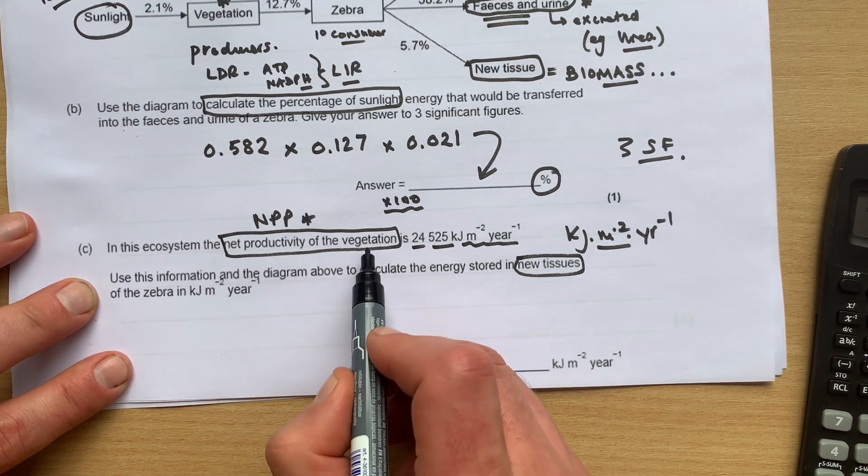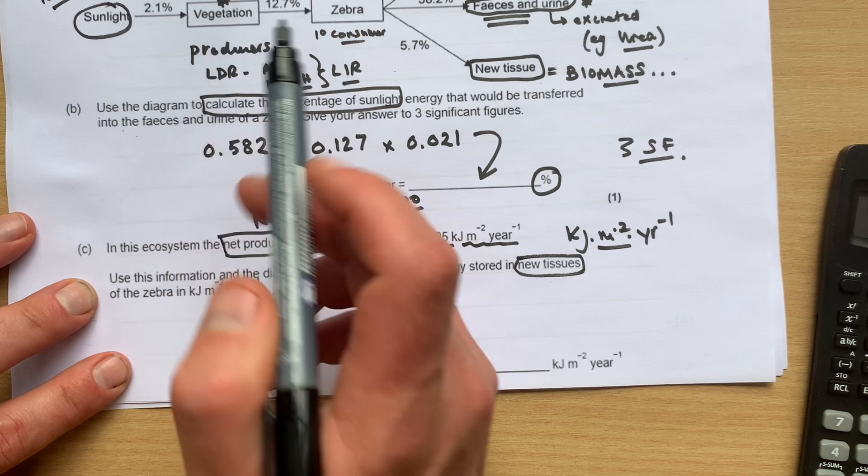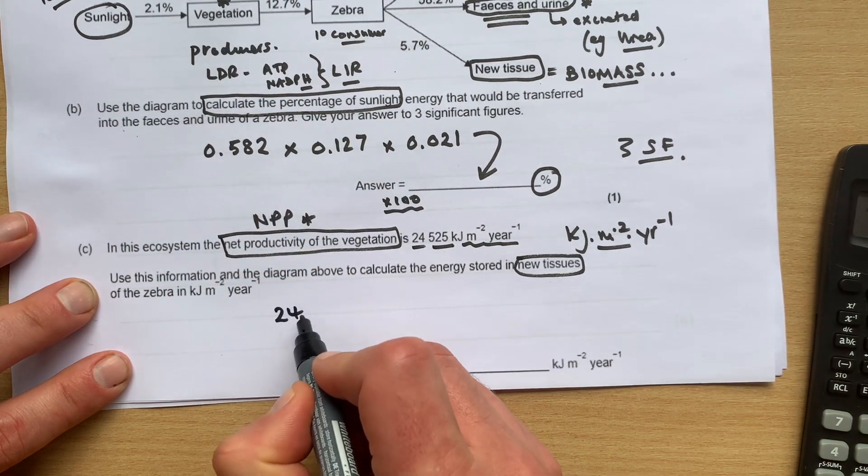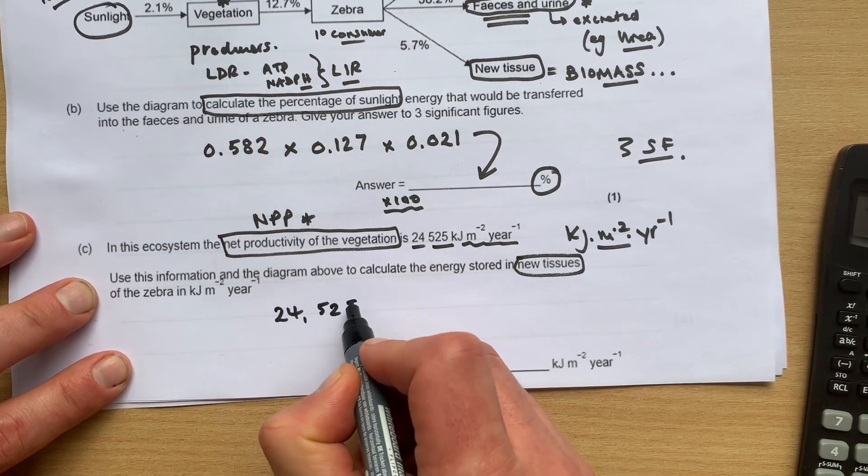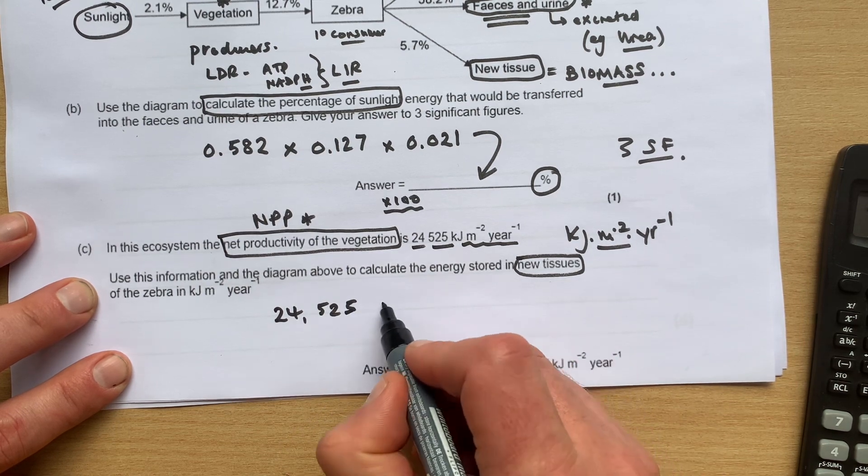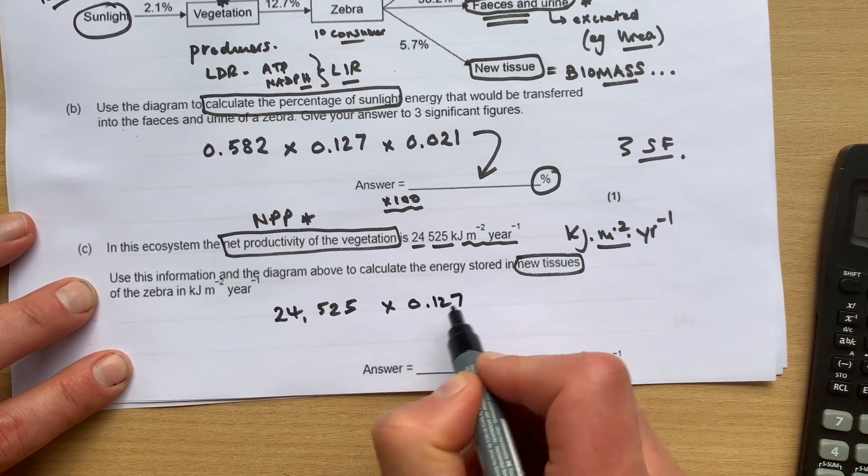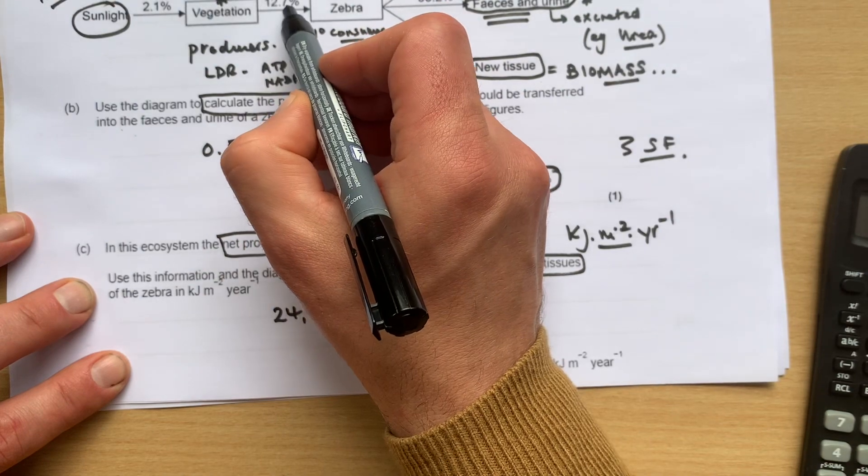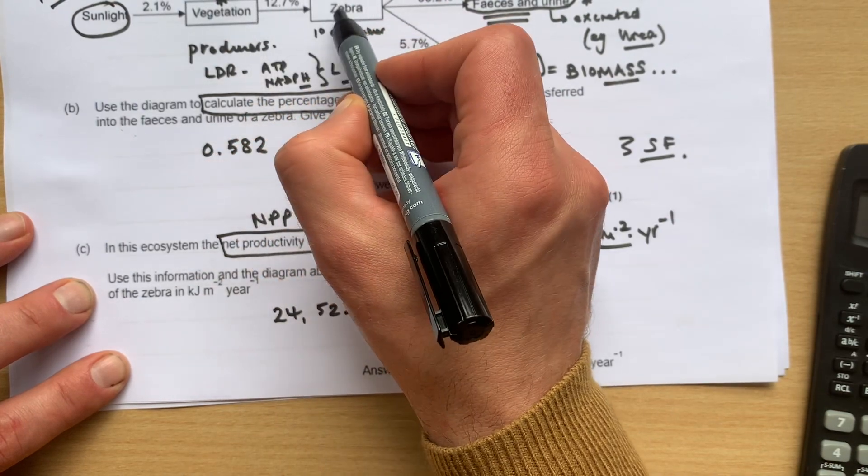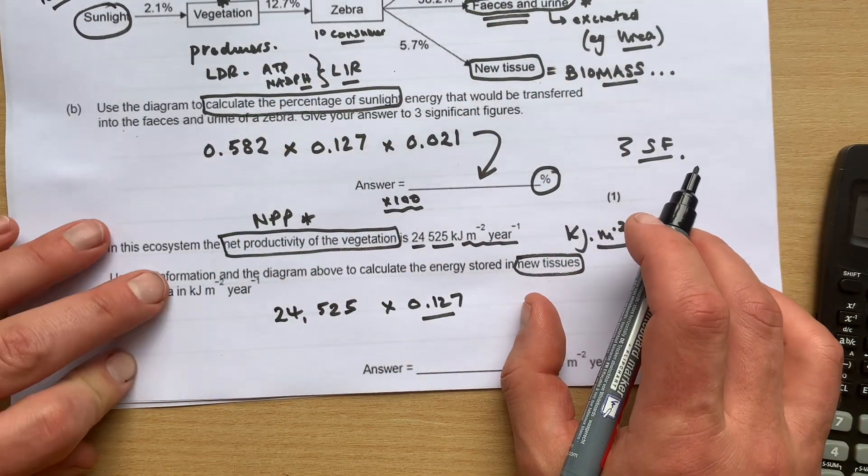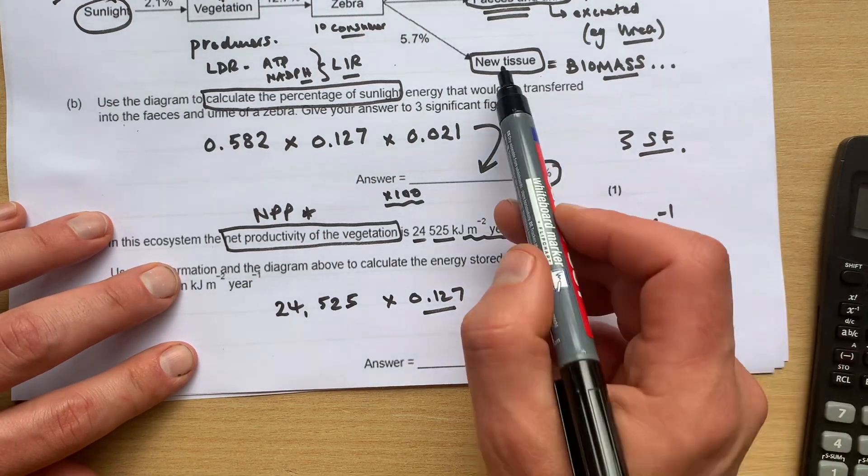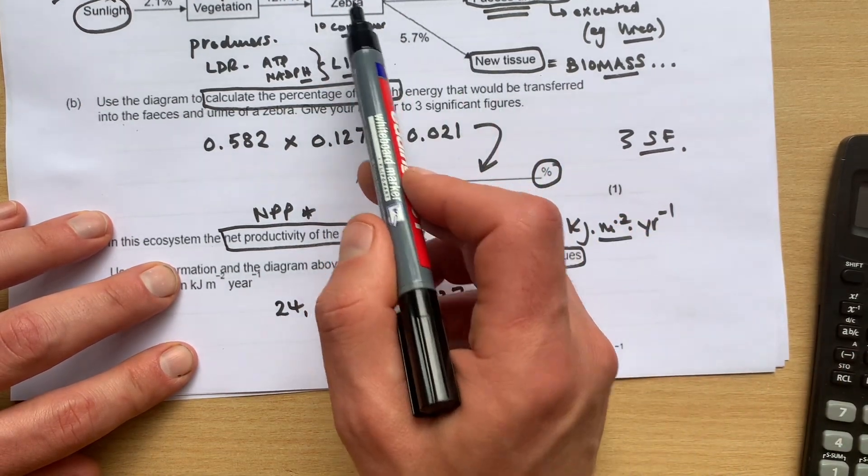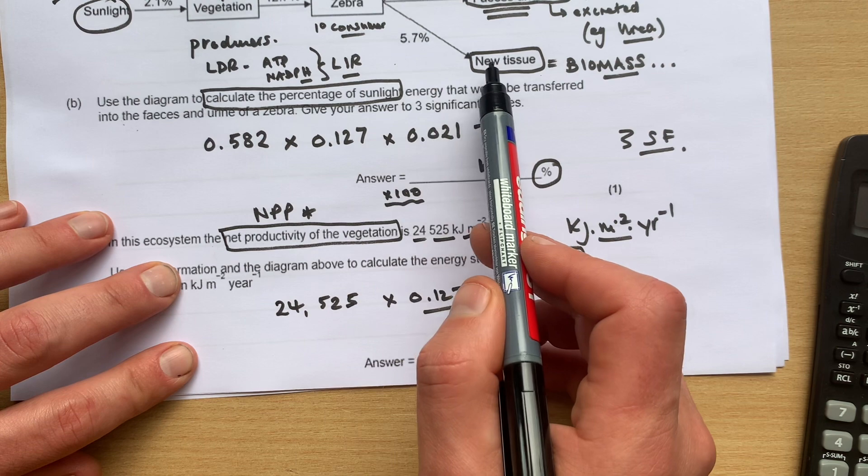So the net productivity of vegetation is the dry biomass, so we'll go 24,525 plus the units times 0.127, because that's 12.7 percent vegetation gets consumed by the zebra - they're holozoic feeders, remember. And we want it in the new tissue, so of that value, 5.7 percent will become the new dry biomass, the cells in the tissue.